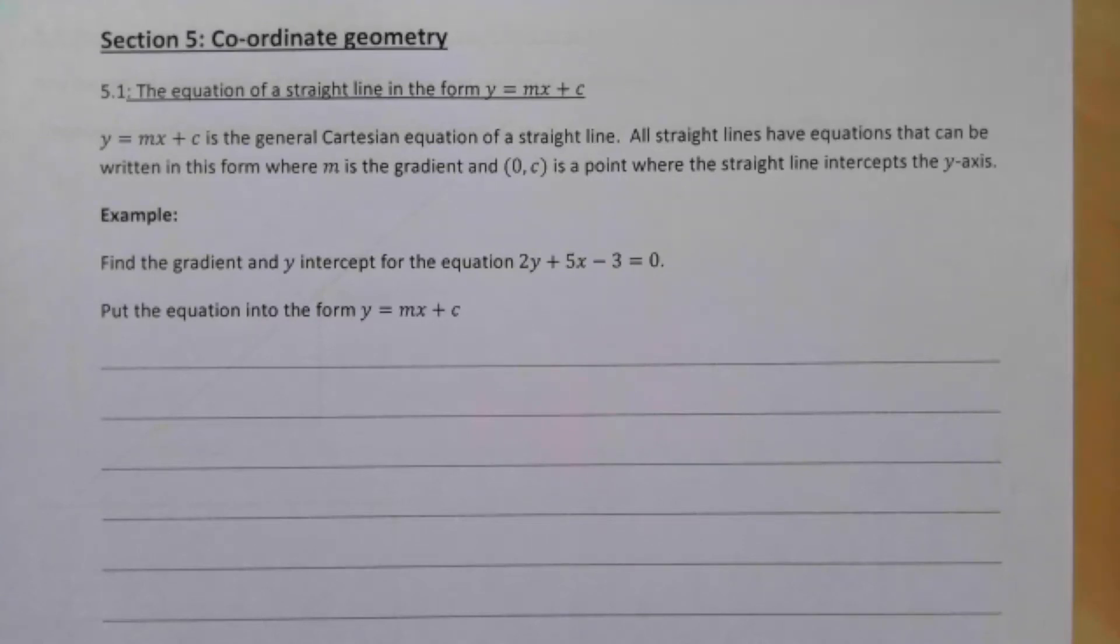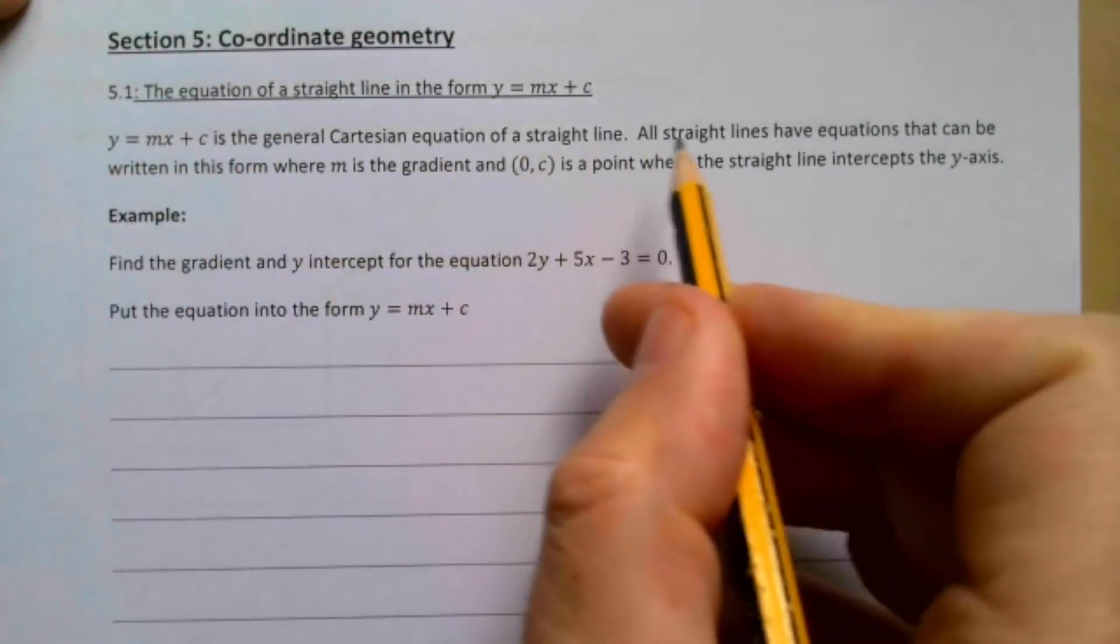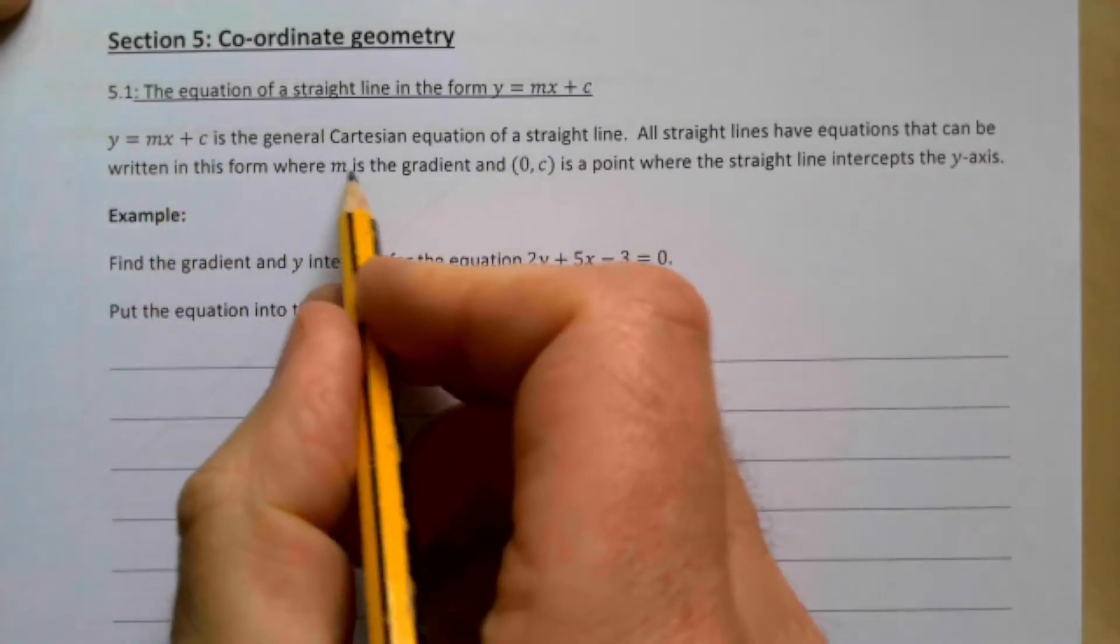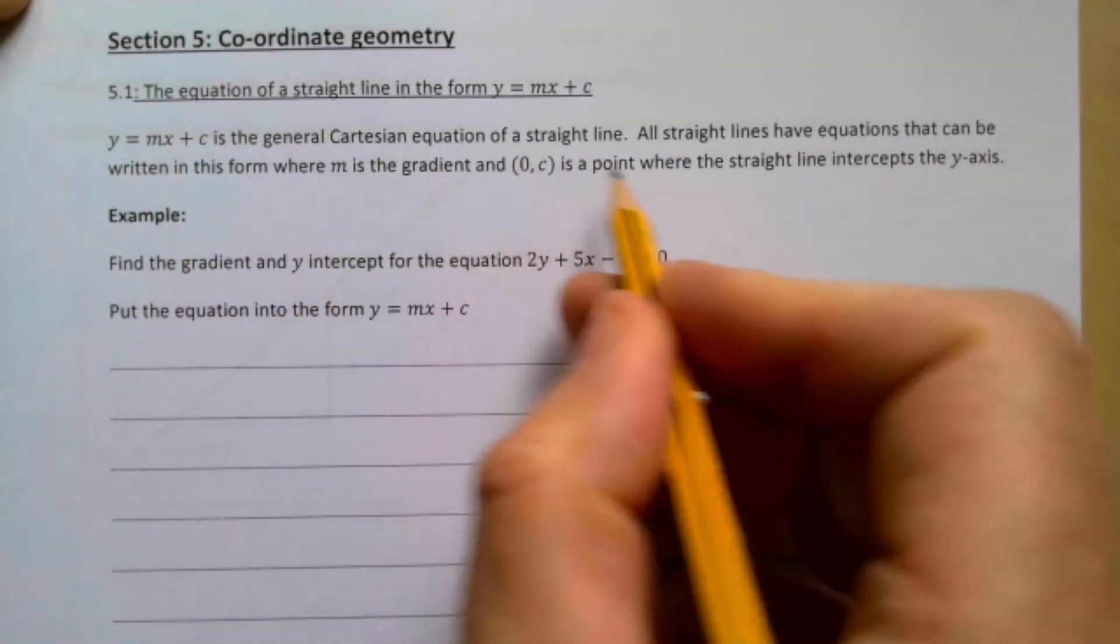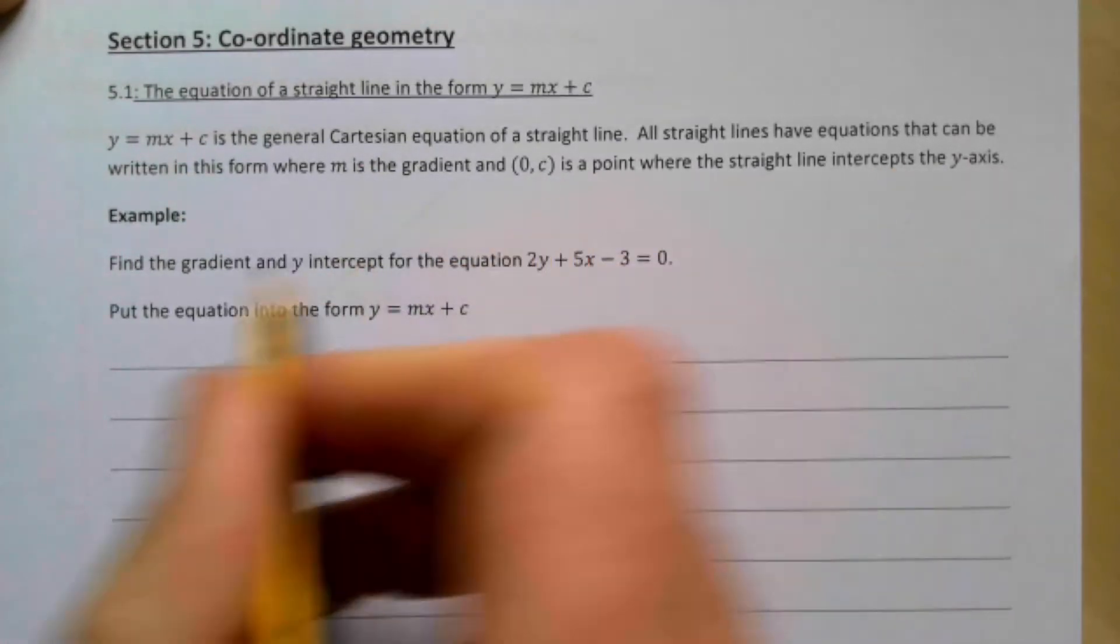This is AS PureNotes. We have just started unit 5, which is coordinate geometry, and so we're taking a look at the equation of a straight line in the form y = mx + c. So y = mx + c is a general Cartesian equation of a straight line, all straight lines have equations that can be written in this form, where m is the gradient and c is the point where the straight line intercepts the y-axis. You would have covered most of this in GCSE anyway.